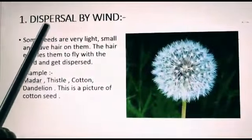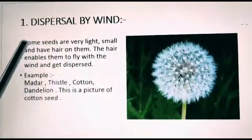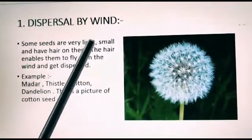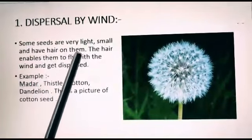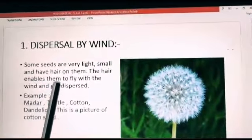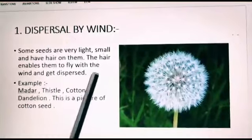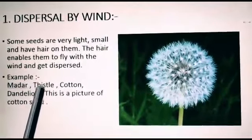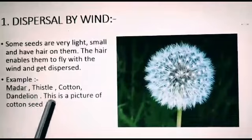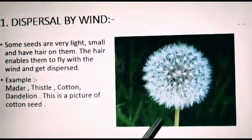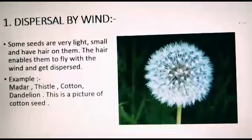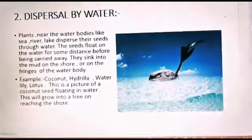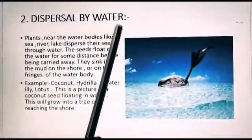Now we will discuss dispersion by wind. Some seeds are very light, small and have hair on them. The hair enables them to fly with the wind and get dispersed. For example, thistle, cotton, dandelion. This is a picture of a cotton seed which disperses by wind. And this is the picture of dandelion seeds, which also disperse by wind.